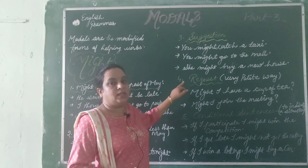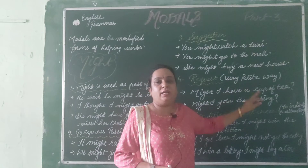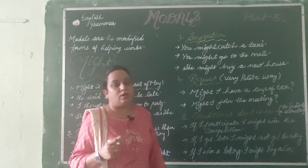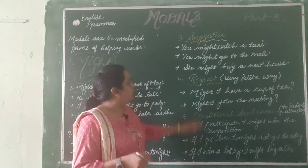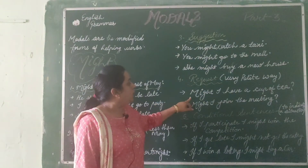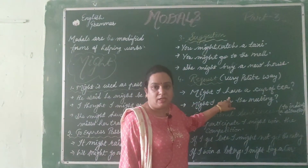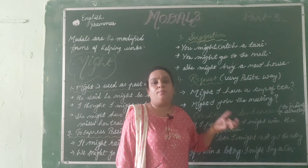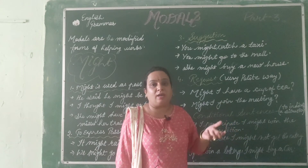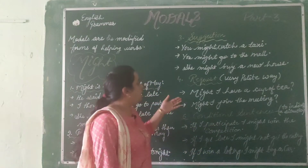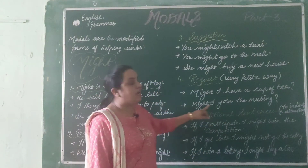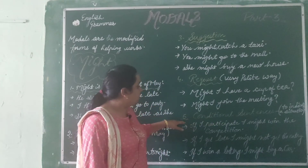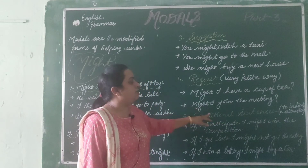The fourth use of might is for very polite requests. 'Might I have a cup of tea?' — you are requesting in a very polite manner. 'Might I join the meeting?' — this is also a very polite request.